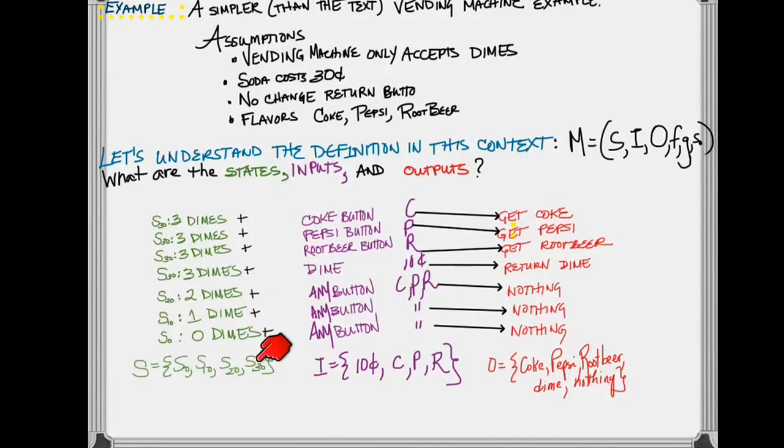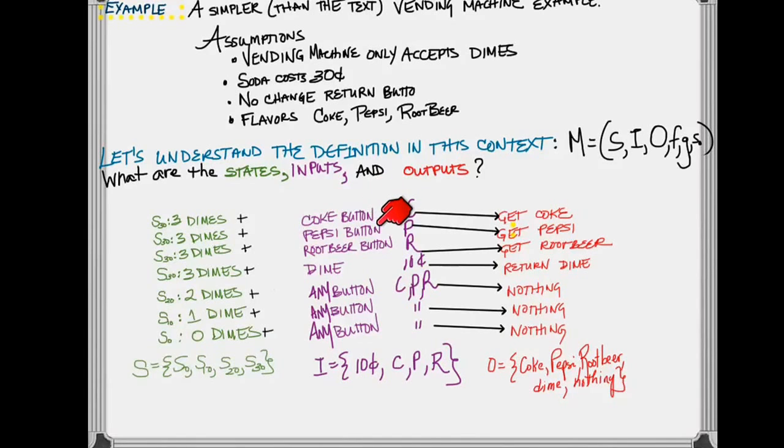With that in mind, our inputs are the actions that we undertake. And our actions can be pressing the Coke button, pressing the Pepsi button, pressing the root beer button, or inserting another dime.